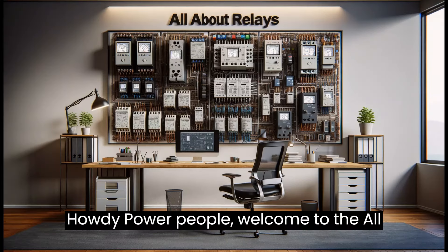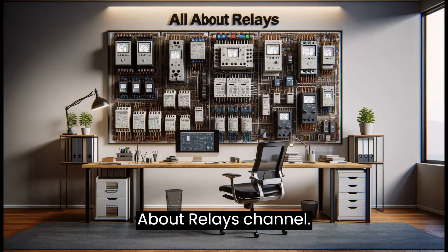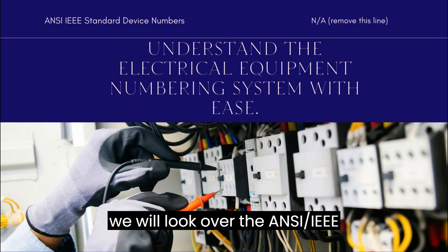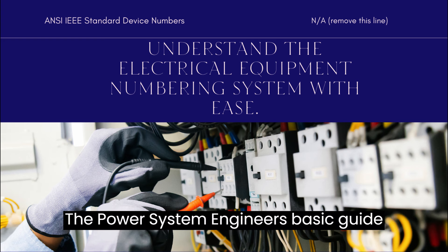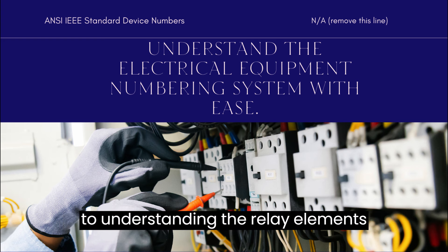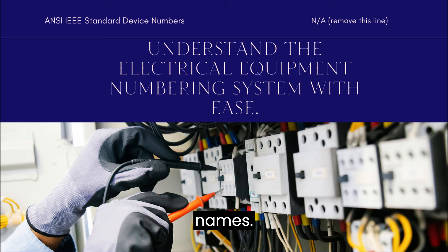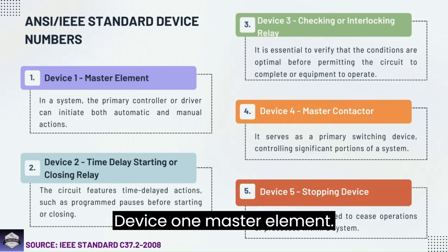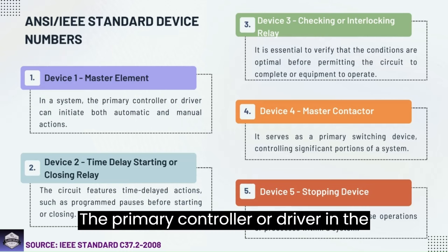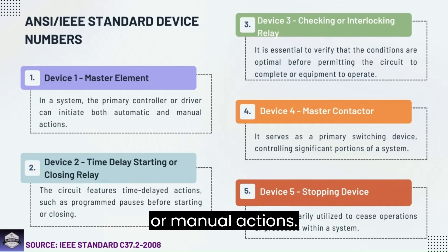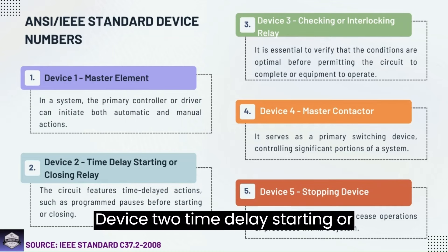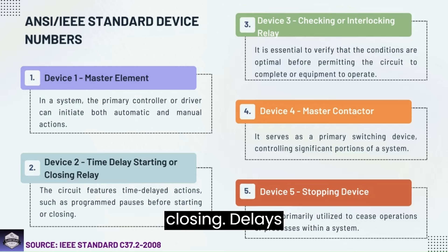Welcome to the All About Relays channel. In this video we will look over the ANSI IEEE standard device numbers — the power system engineer's basic guide to understanding relay elements. Device 1: Master element, the primary controller or driver in a system initiating automatic or manual actions. Device 2: Time delay starting or closing relay, which delays action in a circuit like starting or closing for predetermined time intervals.